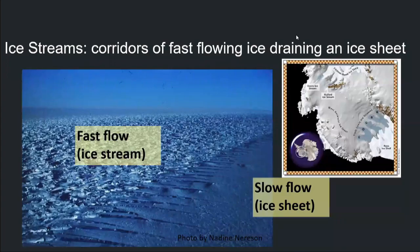Welcome back! That's the last section for this lecture, and also the last kind of odd ice flows that we can see on this planet. And now I'm going to talk about ice streams, which are basically corridors of fast-flowing ice draining an ice sheet.